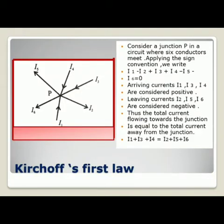Let us move on to Kirchhoff's first law. This diagram shows certain currents flowing inwards and certain currents flowing outwards. The algebraic sum of the currents at a junction is 0 in an electrical network. Consider a junction P in a circuit where six conductors meet. Therefore, we can write that I1 minus I2 plus I3 plus I4 minus I5 minus I6 is equal to 0.